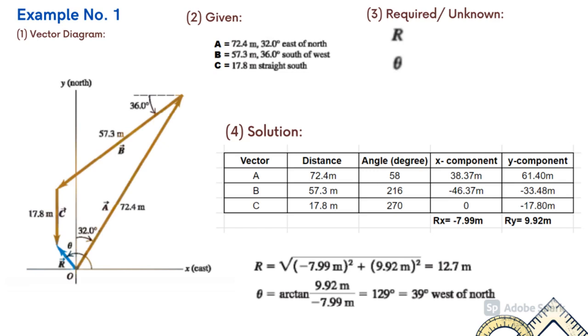Vector A has a magnitude equal to 72.4. The angle is 90 minus 32, that is equal to 58. Vector B is in quadrant 2. It has an angle of 180 plus 36, that is equal to 216. Vector C is along the negative y-axis. It has an angle equal to 270.